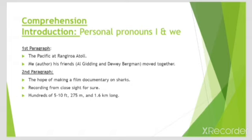In paragraph number 1, if we look at the texture of the paragraph, the author utilized personal pronouns. What are personal pronouns? I, me, we. Why is that so? Because it is a narrative style of writing, which means that he is telling us his story.